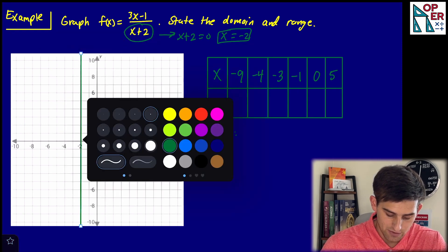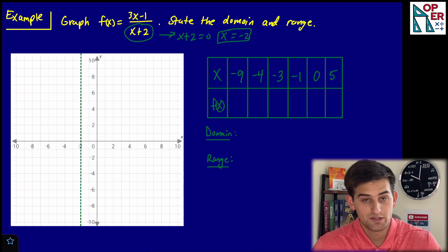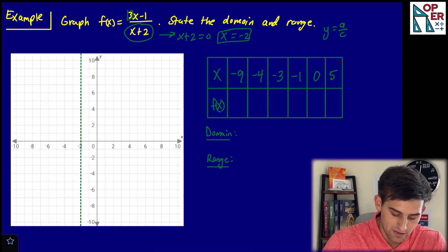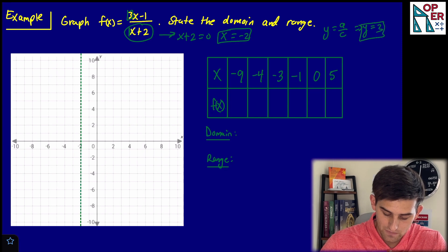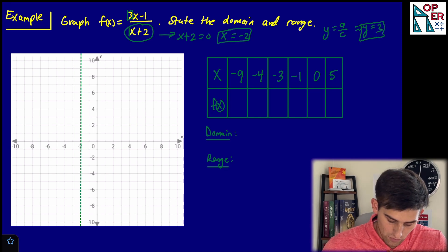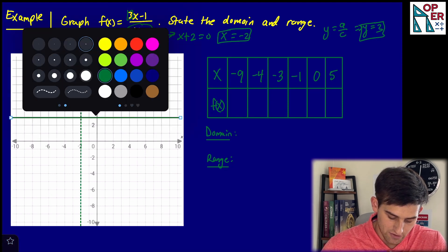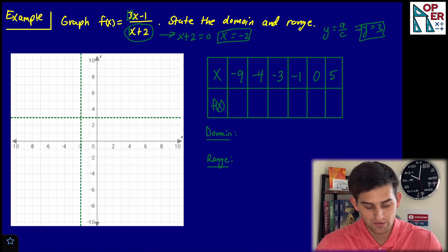We draw a vertical dashed line through negative two on the graph. Now for the horizontal asymptote, it's y equals a over c. Here a is three and c is one, so it's just y equals three. We draw that horizontal dashed line at y equals three. Now we have both asymptotes on the graph.